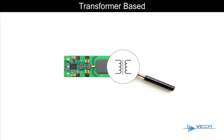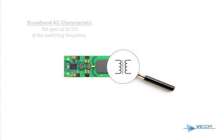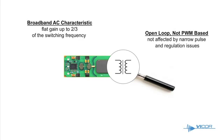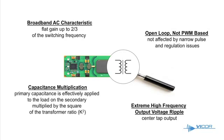As mentioned earlier, the converter is based on a transformer and offers wide broadband AC characteristics, a self-regulating mechanism not based on external controls, very high frequency output voltage ripple, and effective capacitance multiplication from primary applied to secondary.